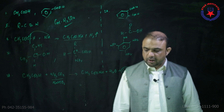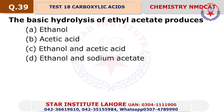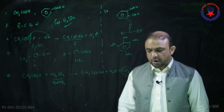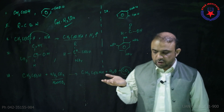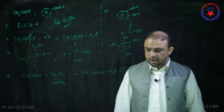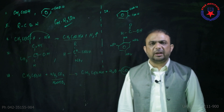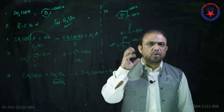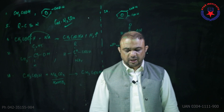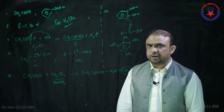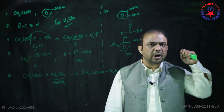Choice beta. Question number 39: The basic hydrolysis of methyl acetate produces ethanol and acetic acid, because hydrolysis of an ester gives the corresponding acid and alcohol — choice charlie. Question number 40: Pure acetic acid freezes into an ice-like solid at 17°C, forming glacial acetic acid — choice delta.